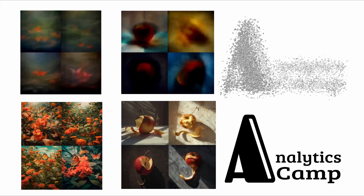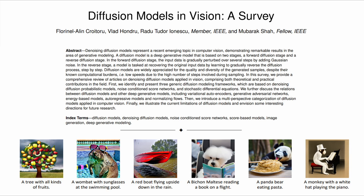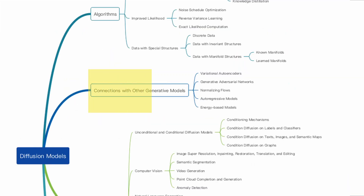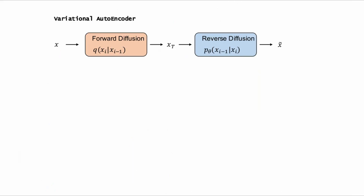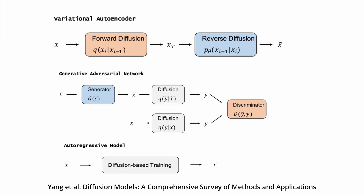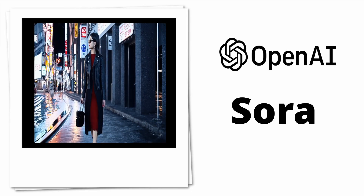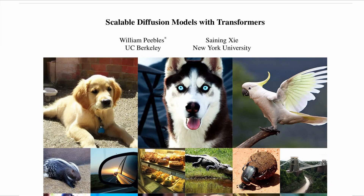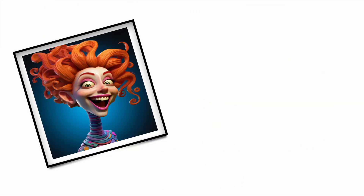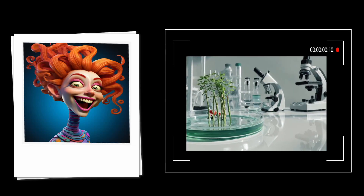Even though diffusion models can be directly used in image generation, natural language processing, temporal data modeling, and computer vision, researchers have noticed that the best results are achieved when diffusion models are combined with other deep generative models such as variational autoencoders, generative adversarial networks, and autoregressive models. OpenAI, being at the forefront of these research studies, has decided to do exactly the same, combining the diffusion model with the transformer architecture to enhance the capabilities of both image and video generation.